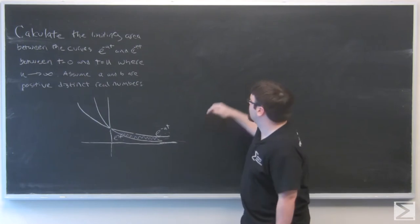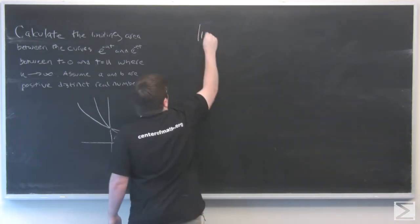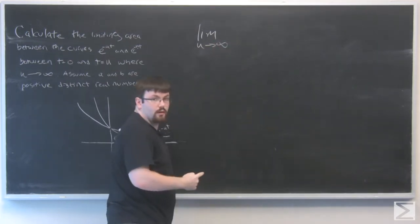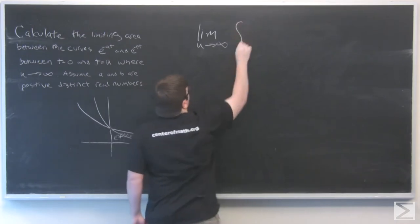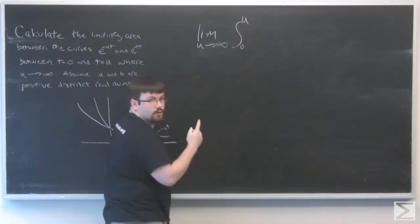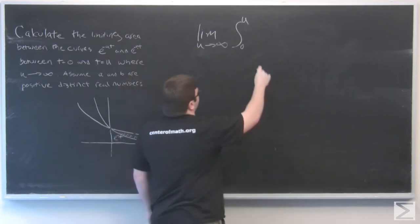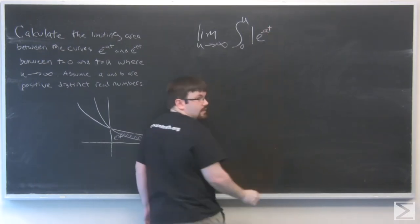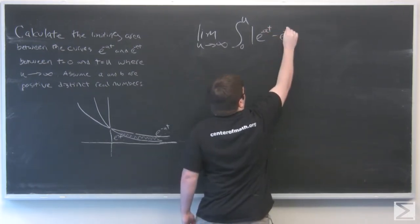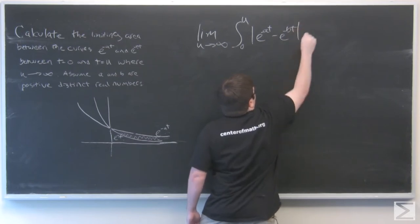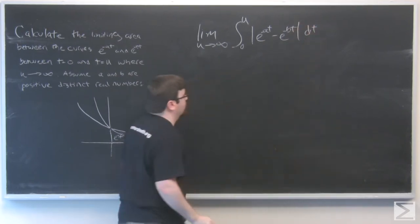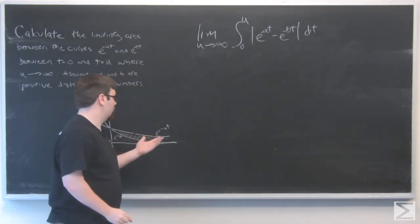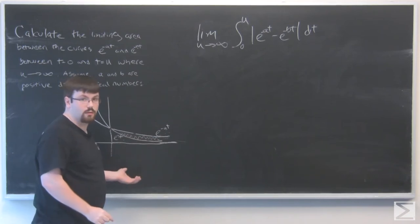In order to do this, we need to set up our limit, the limit of our integral from zero to u. We're going to start with the absolute value of e to the negative at minus e to the negative bt. We're using this absolute value because we don't know if a is greater than b or b is greater than a.